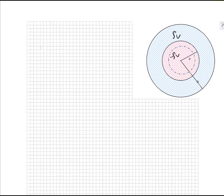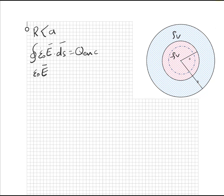بالنسبة للمنطقة الأولى راح تكون أقل من A. هاي أول منطقة، لا تساوي بل أقل من A. فهنا راح نطبق قانون قاوس: تكامل أبسلون نوت يدوت دي أس يساوي Q نكلوز. هذا الطرف ما هو إلا أبسلون نوت في E كابتول في المساحة لسطح القاوسيان الخيالي اللي هو أربعة باي R سكوير. حديثنا راح يدور حول Q نكلوز ضمن هاي المنطقة.